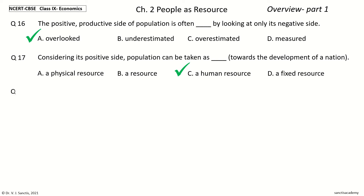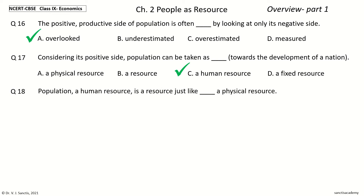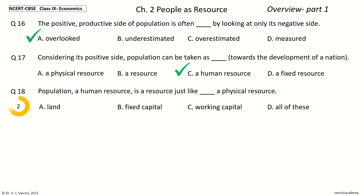Question 18: Population, a Human Resource, is a Resource just like ___, a Physical Resource. The options are: Land, Fixed Capital, Working Capital, All of These. Your time to choose. And the answer is: All of These. So, Population as a Human Resource is a Resource just like Land, Fixed Capital, or Working Capital — a Physical Resource.